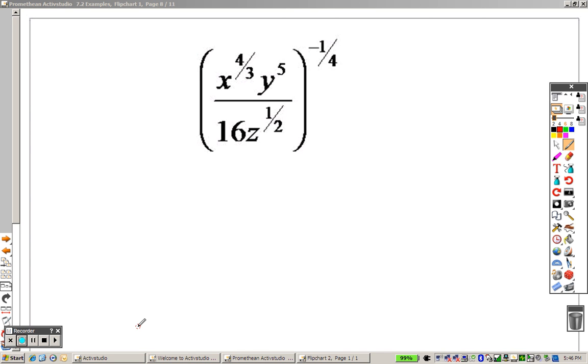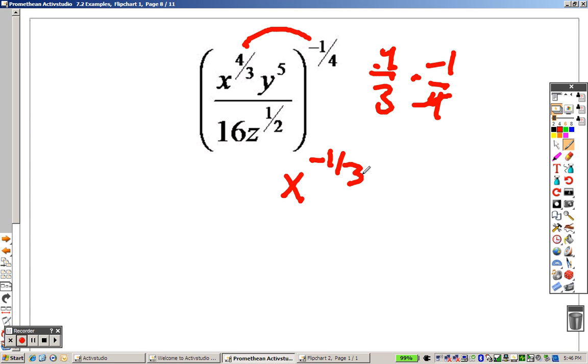Continuing with 7.2 with the rational exponents here. When we're doing this now, still like before, distribute through. And when I do that, 4 thirds times negative 1 fourth, the 4's cancel out, so I end up with x to the negative 1 third on top.